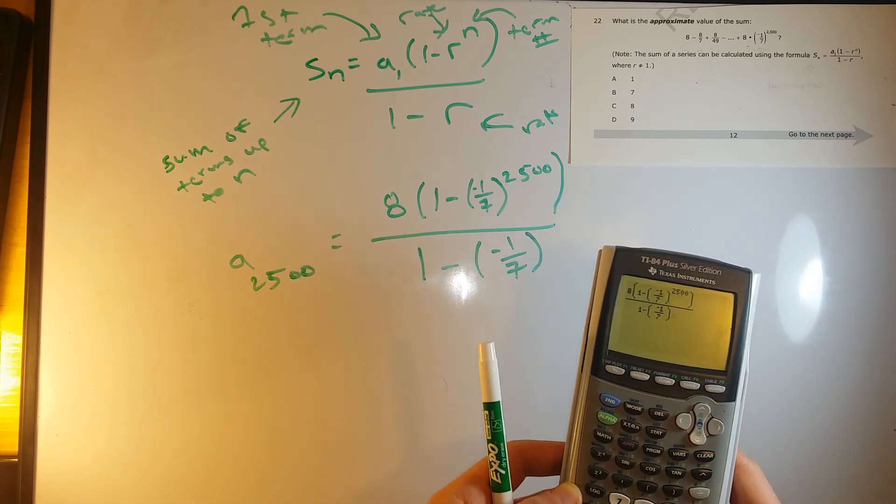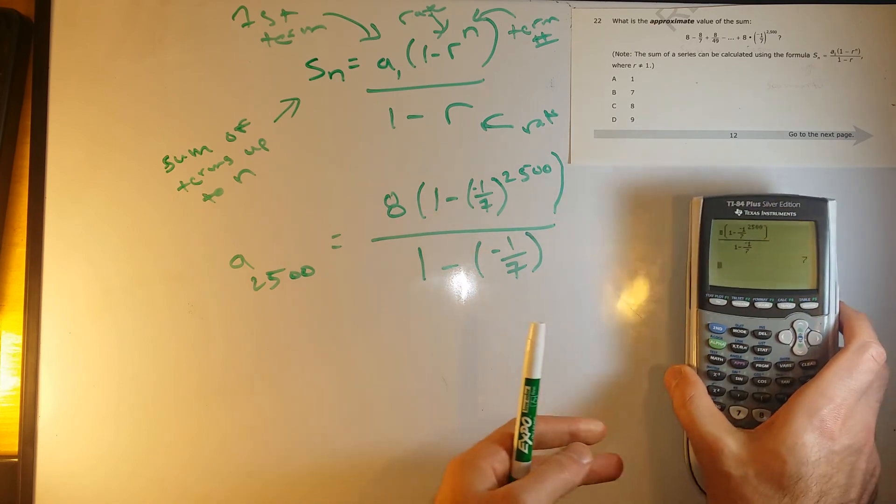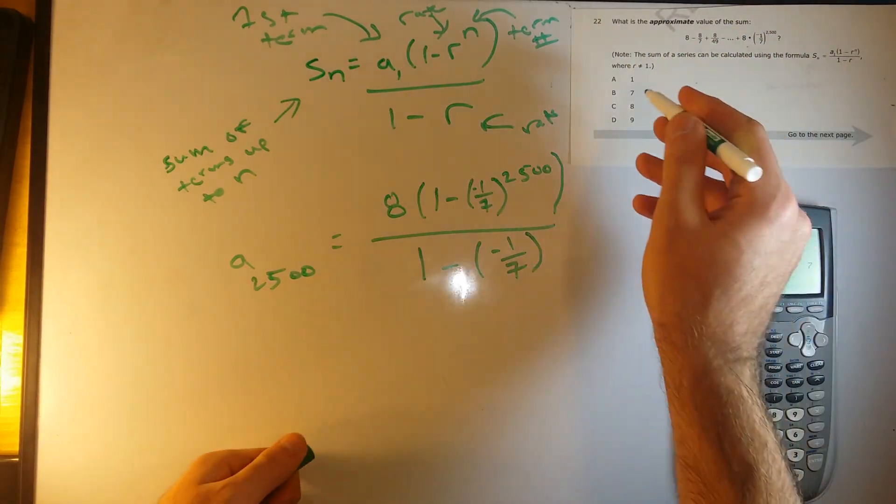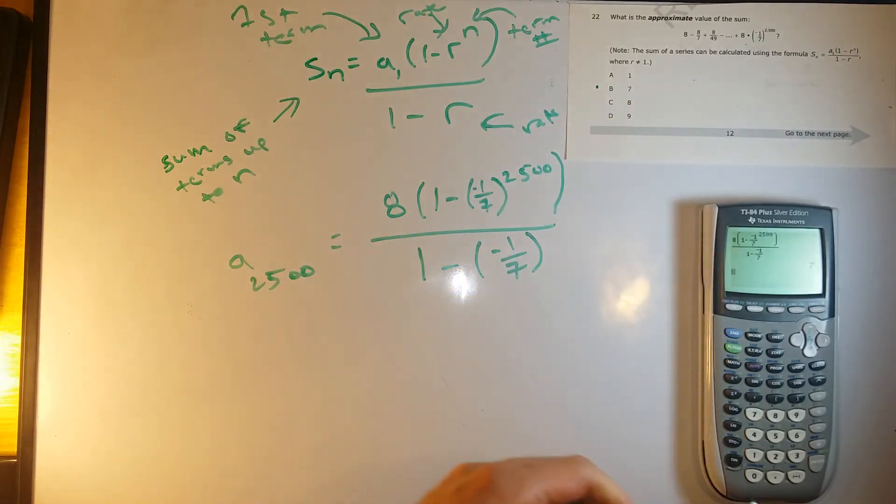And this gives us 7. So there we go. This whole thing, the sum of the first 2,500 terms here would be 7, answer choice B.